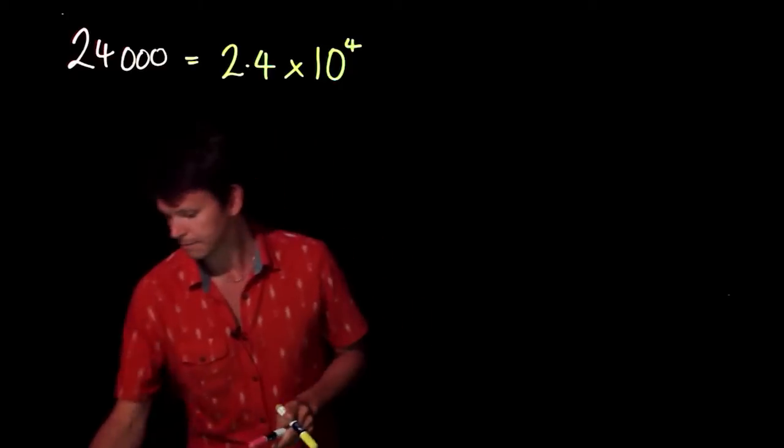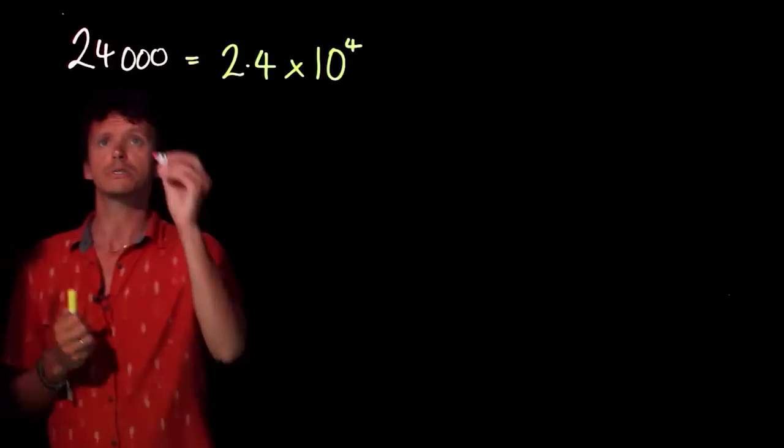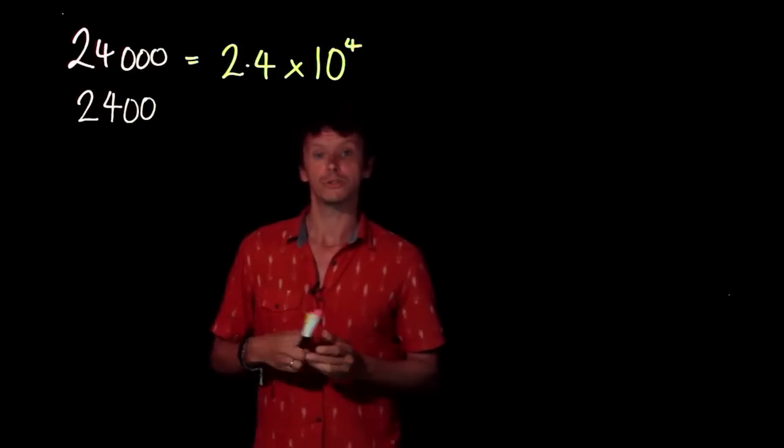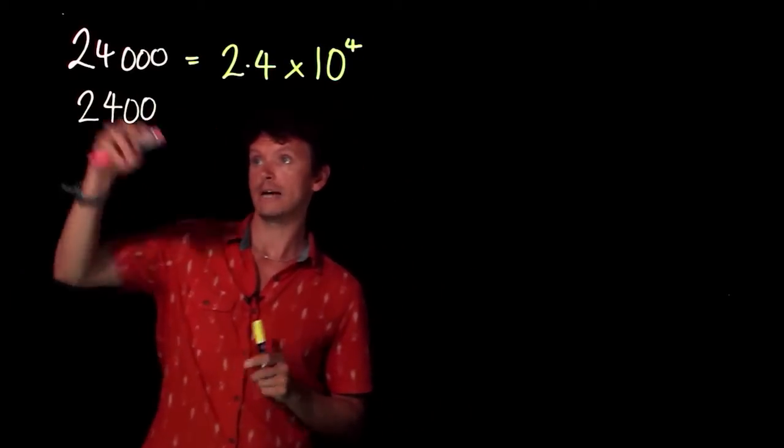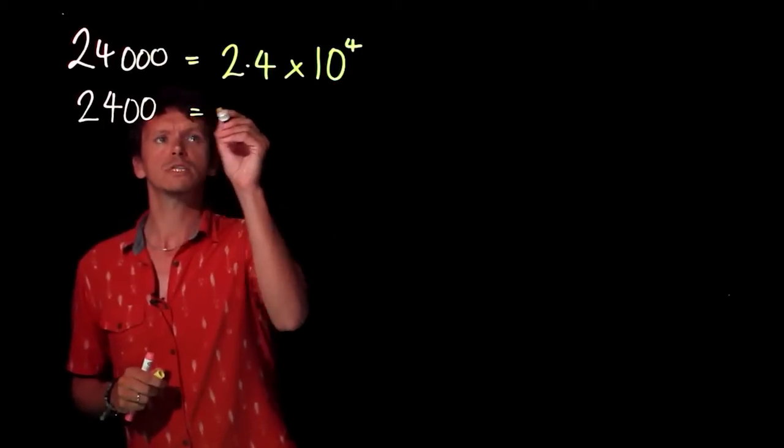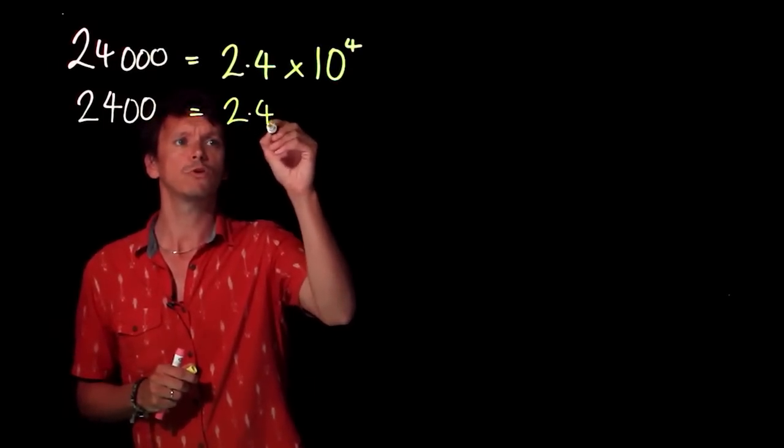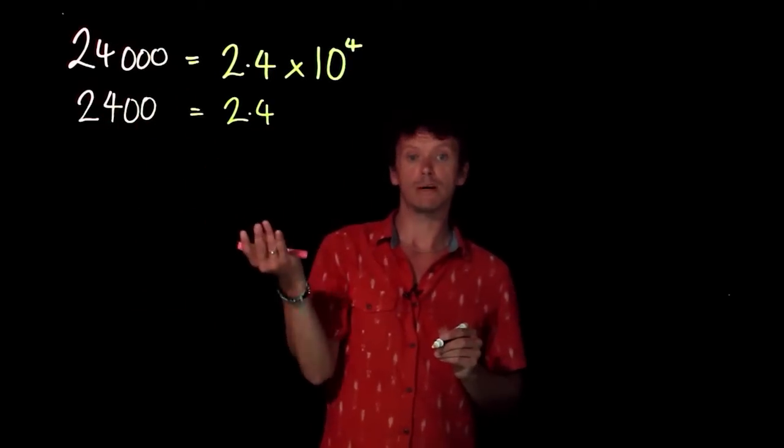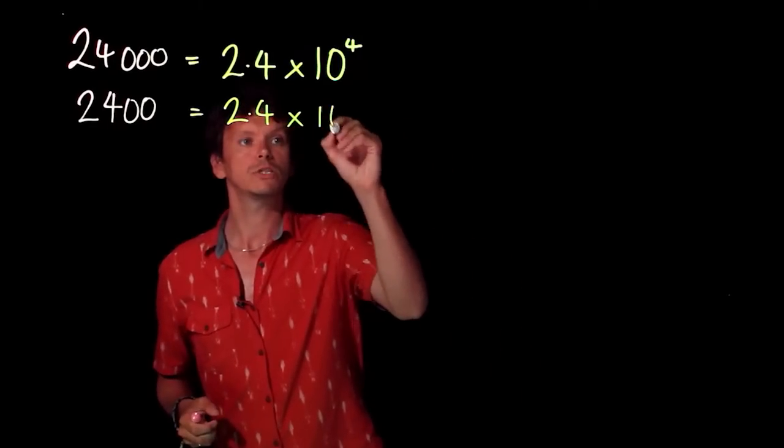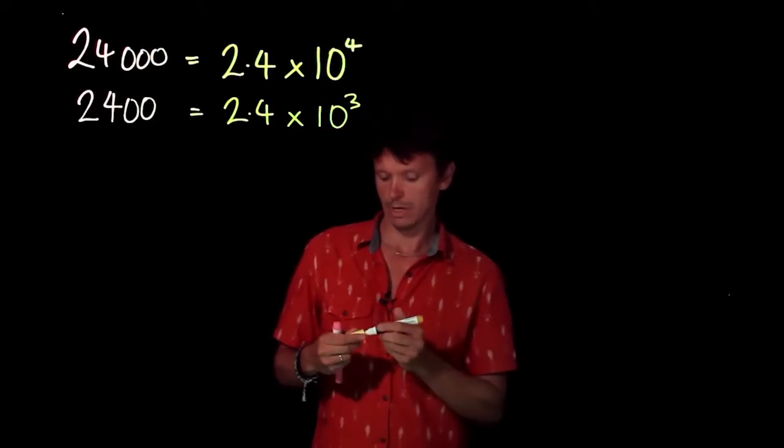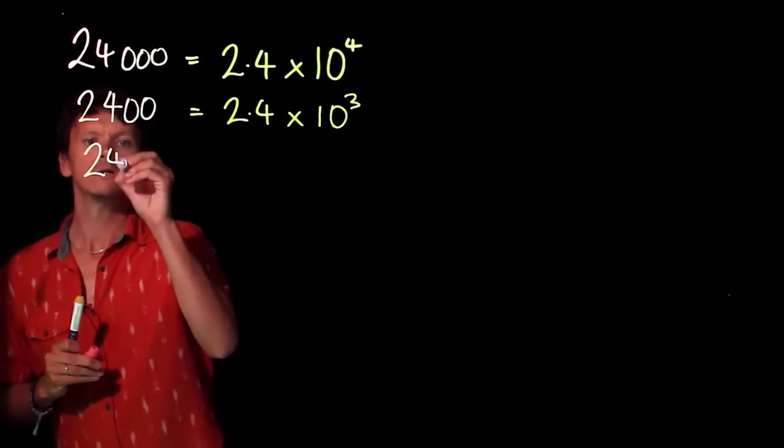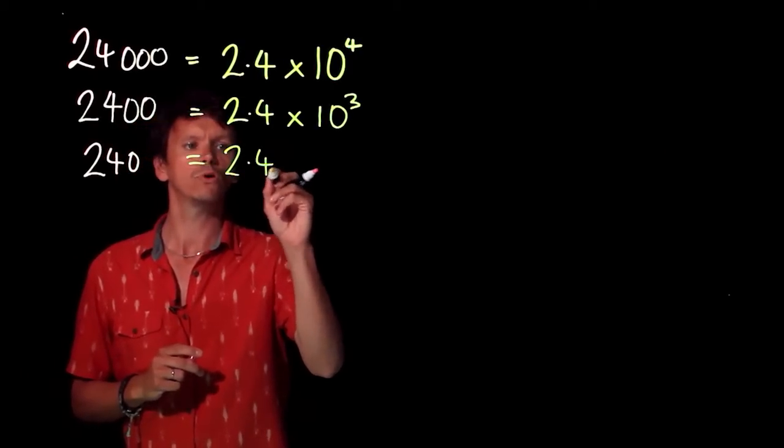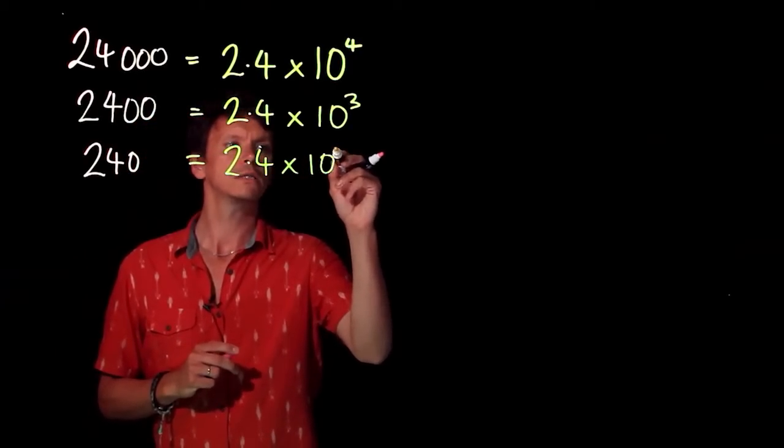Supposing we started looking at smaller numbers. If we look at 2,400, we've divided by 10, come down by 1 power of 10. What do we multiply 2.4 by to get 2,400? We multiply it by 1,000, which is 10 to the power of 3. If we come down again, 240 is 2.4 times 10 to the power of 2.